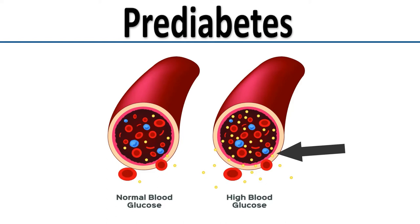You can delay type 2 diabetes, or even prevent it, by making lifestyle changes. These include losing extra weight if you are overweight, and getting more exercise. If you are overweight, losing 5% to 7% of your weight can help. Aim for at least 150 minutes a week of physical activity.